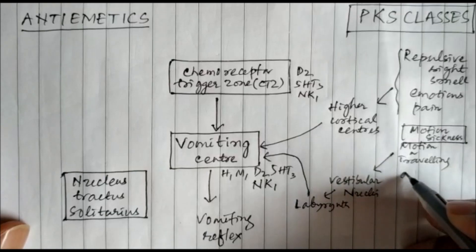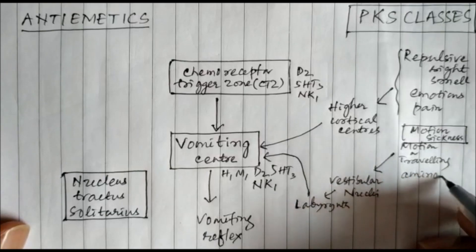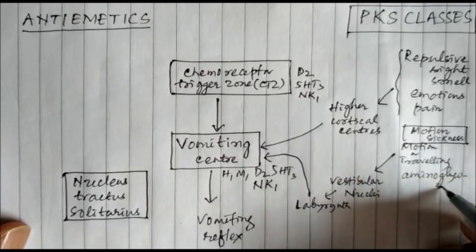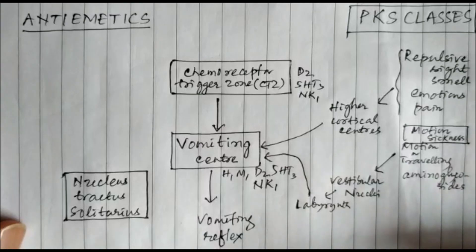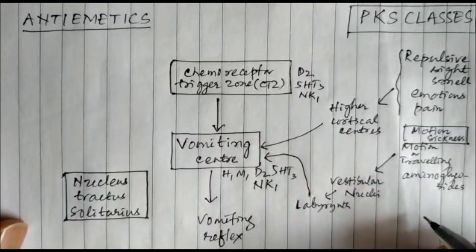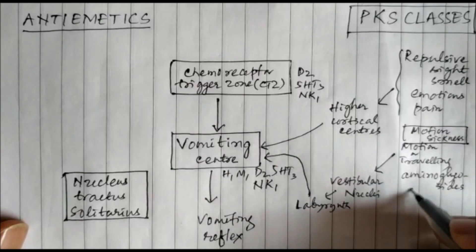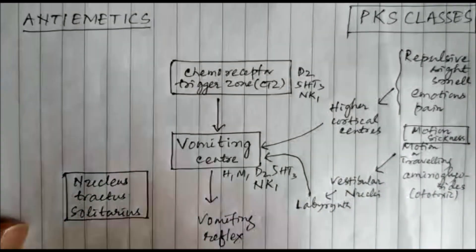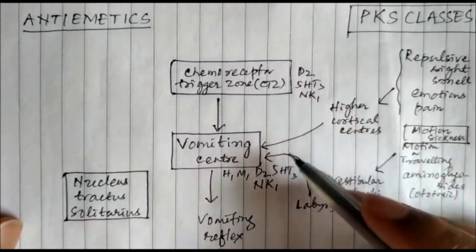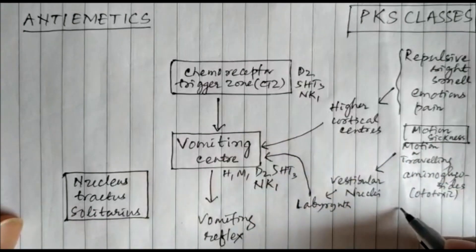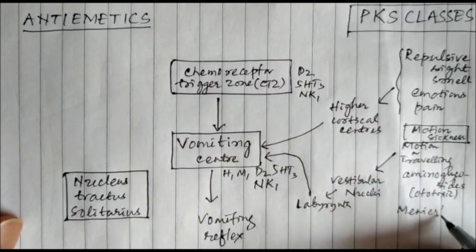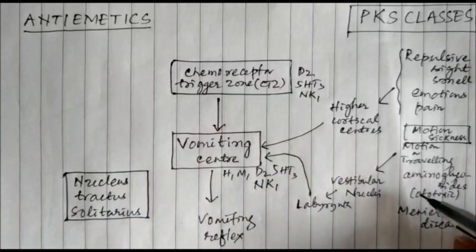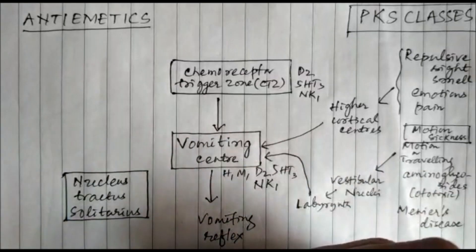Besides motion, there are drugs which are toxic to the ear — ototoxic drugs — like aminoglycosides such as streptomycin, kanamycin, and amikacin. These ototoxic drugs can also cause vomiting. There is also a disease called Meniere's disease, where there is stimulation of the vestibular nuclei and the vomiting center.